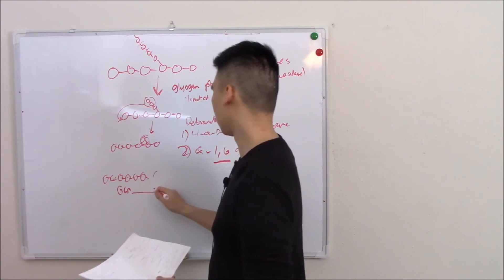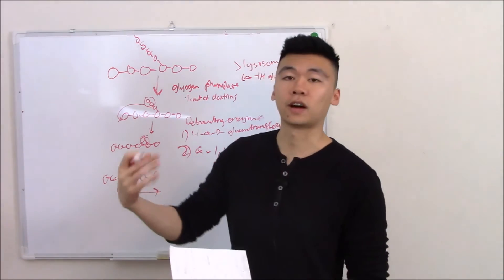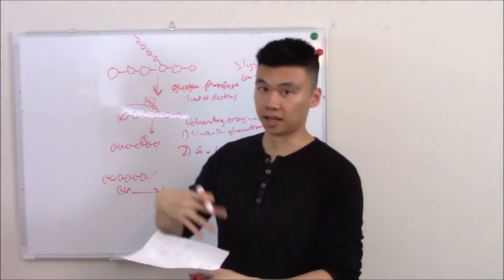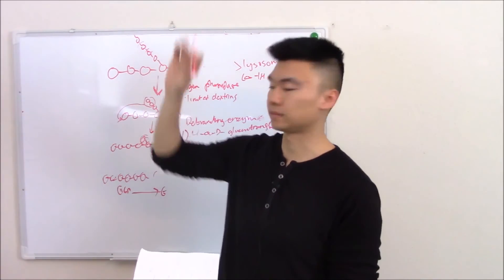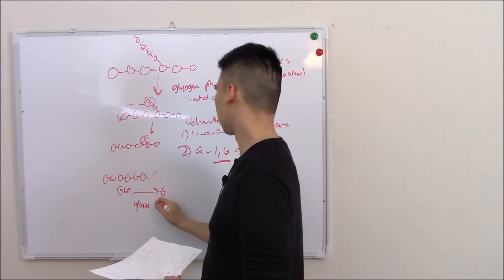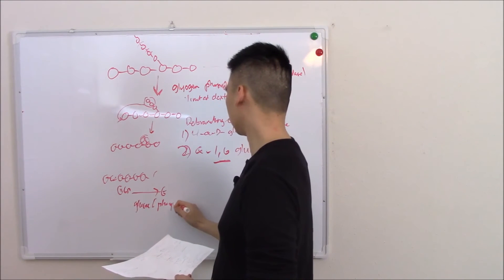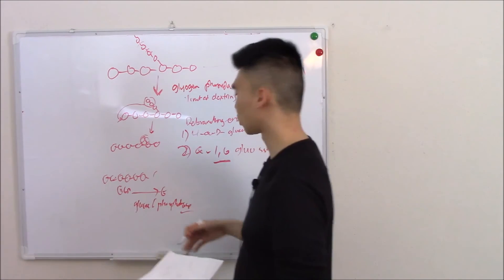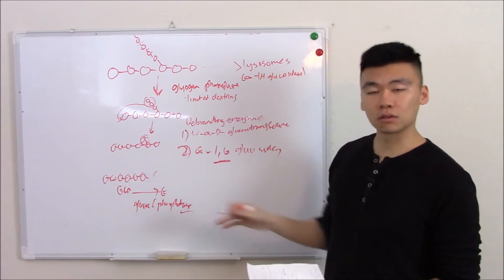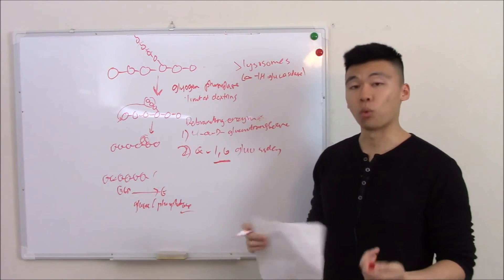G6P - glucose 6-phosphatase takes that phosphate group off, untraps it, becomes glucose and leaves. So glucose 6-phosphatase releases that free glucose. That's how you go from glycogen to glucose, breaking it down.